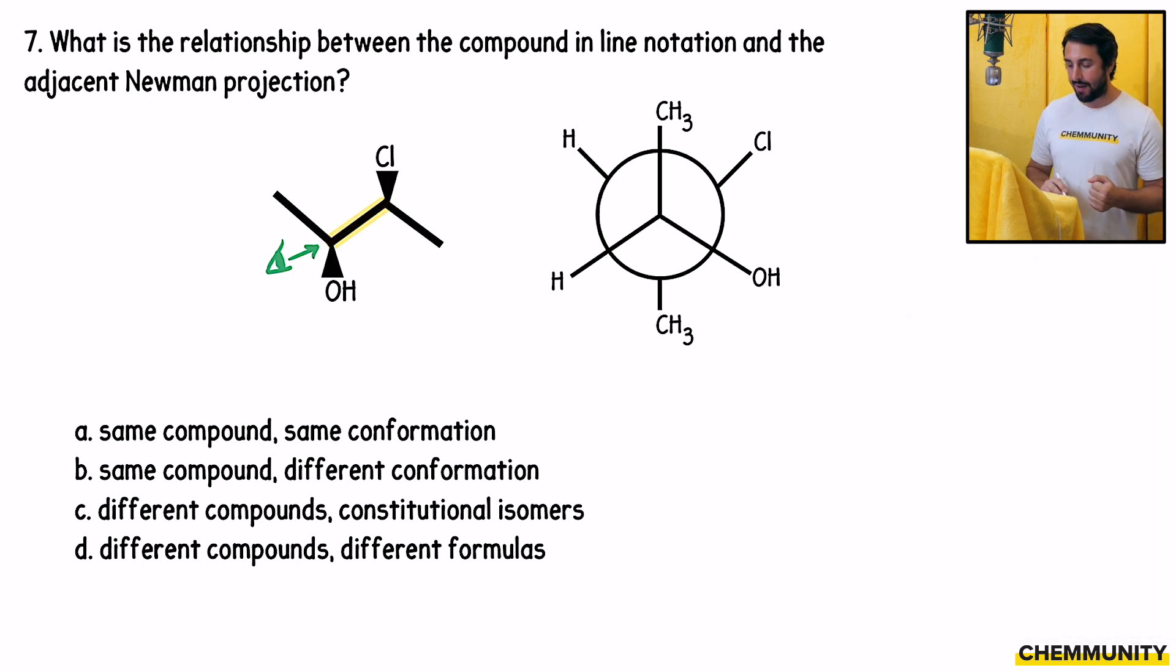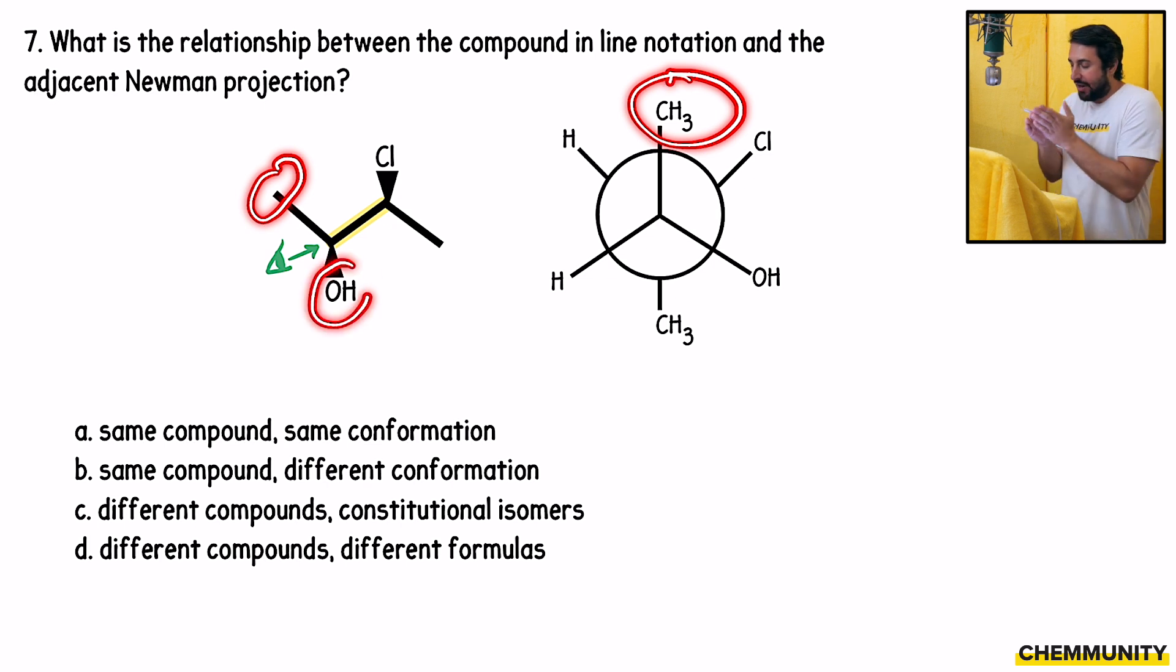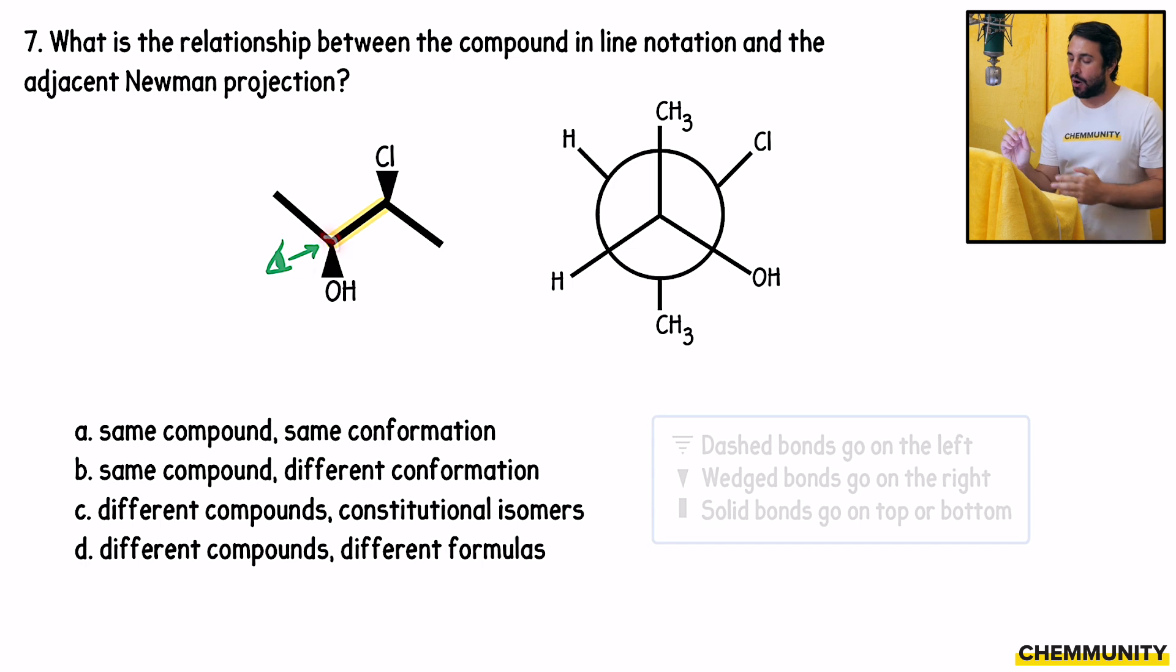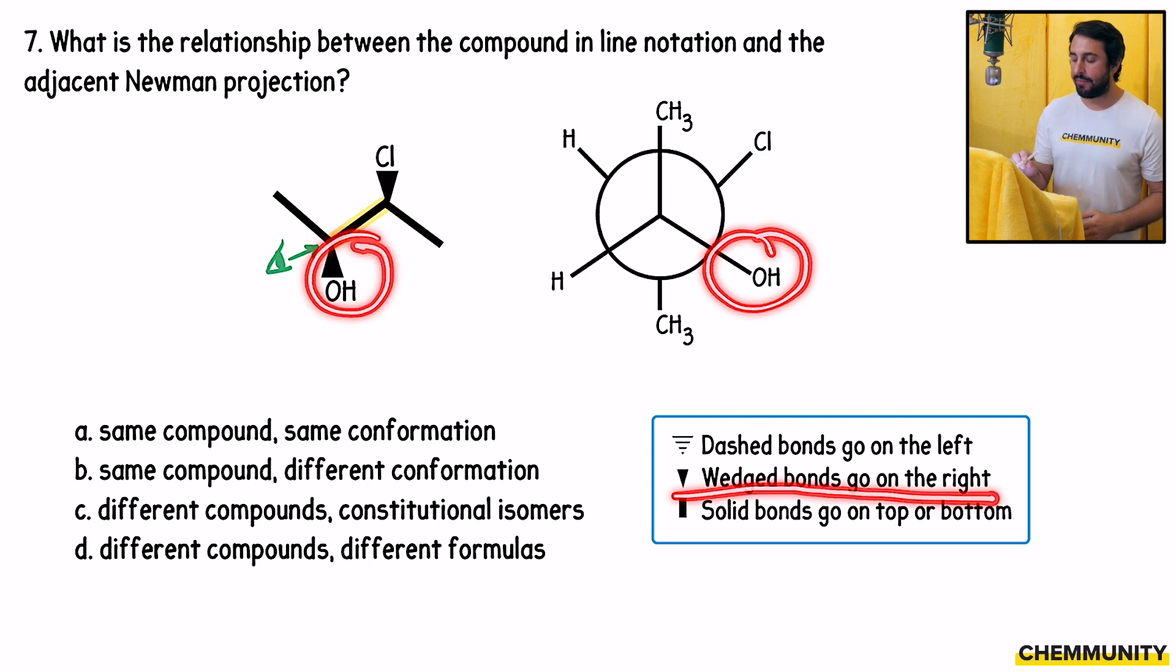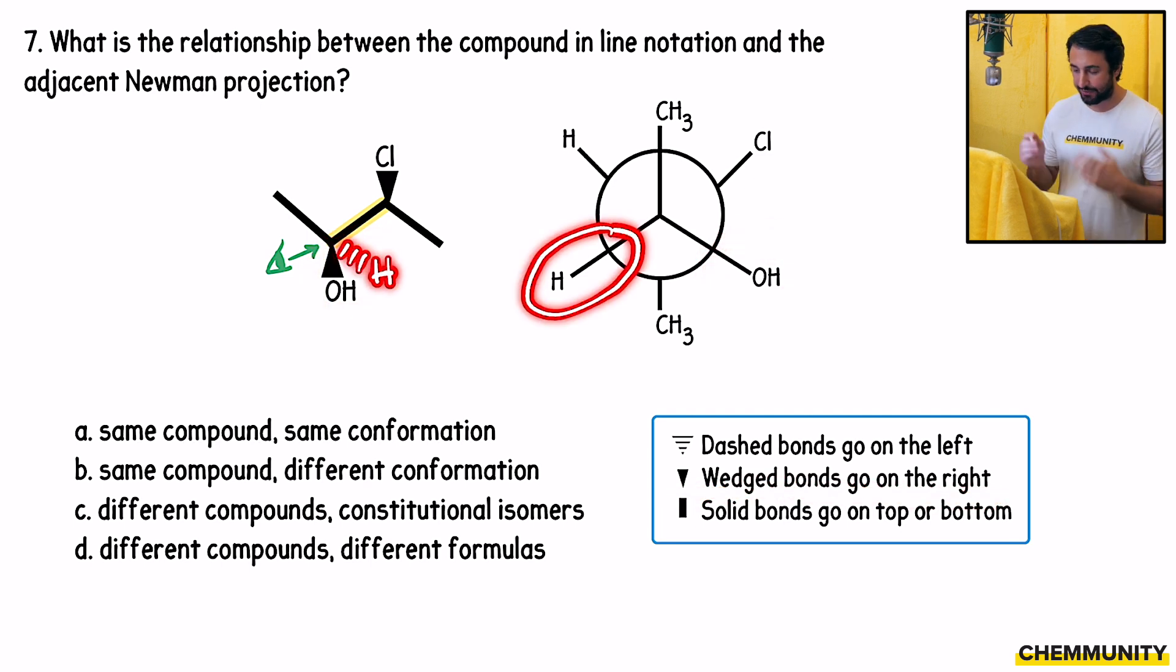And so what do we notice? If we are looking down that bond, we're going to have a methyl group projecting directly upwards. So that's right there. We will have OH down and to our right, because if we are in the plane of the screen and that OH is projecting forwards from the screen, it is going to be down and to our right. And then the implied hydrogen will be down and to the left.